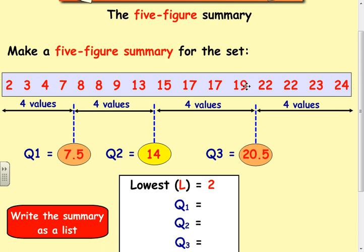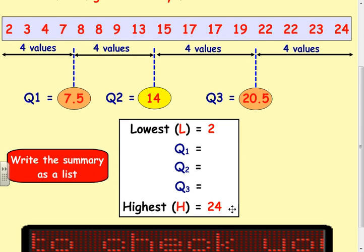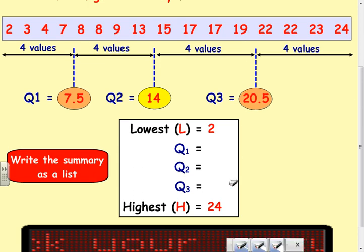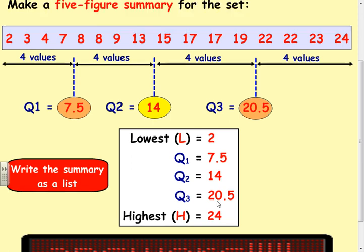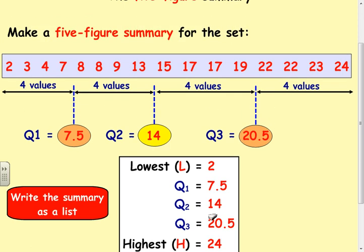A bit harder, 19 and 22. Various ways. You can add them both together and get 41. In half, 41, you get 20.5. Some people like to get the difference, which is 3. Half it, which is 1.5, and go forwards, 19 plus 1.5. So, there's your five figure summary, which you can turn into something called a box plot.